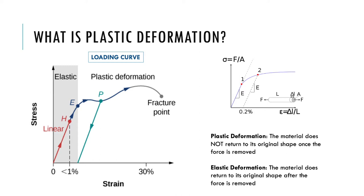Also in a loading curve, the elastic limit E is important because it shows how much force a material can take and still return to its original shape. After the elastic limit, the material enters a state of plastic deformation, meaning it cannot return to its original shape — once the force is removed, the material is permanently deformed. With elastic deformation, the material can return to its original shape once the force is removed. This is seen through the unloading curves shown by the red and light blue lines. The red line shows the elastic unloading curve, and the plastic unloading curve shows that even after the force is removed, the original shape is not obtained — there is still some stress and strain.